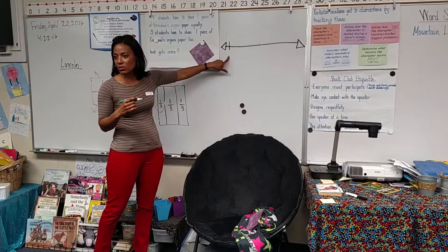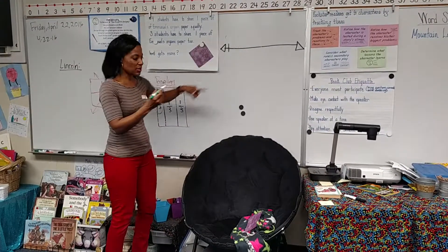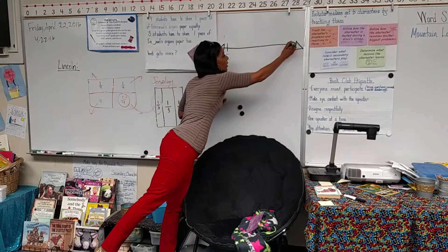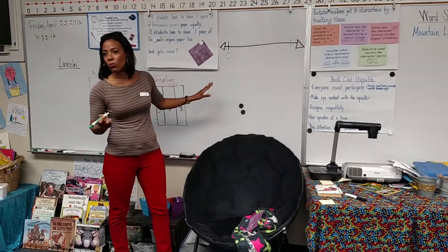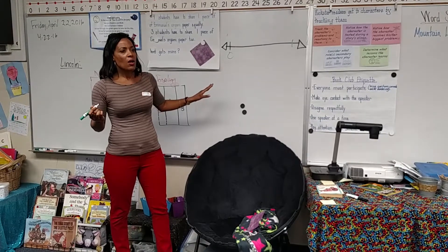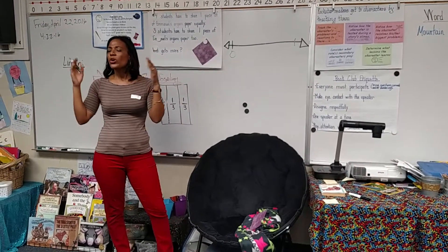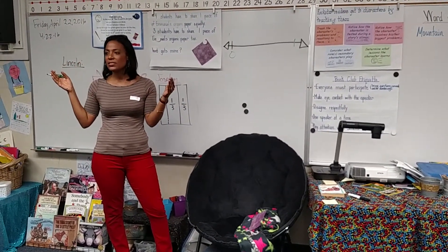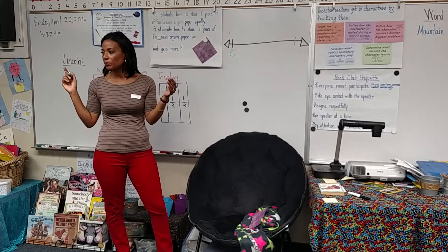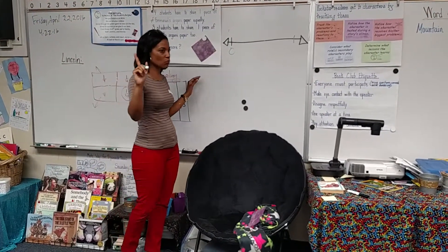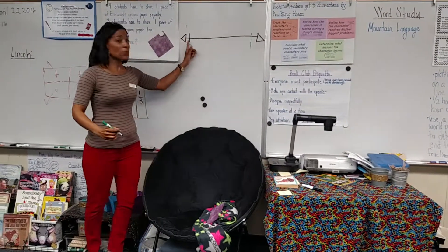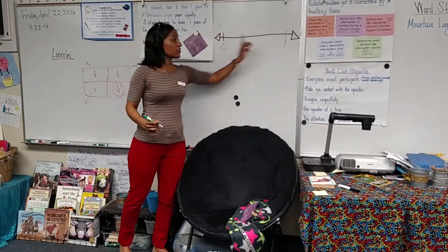So what number would we put here first? Zero. Zero, nice. And then what number would go here at the end of our number line? We're working with a piece of paper — a whole. How many whole pieces of paper? One. Just one whole.